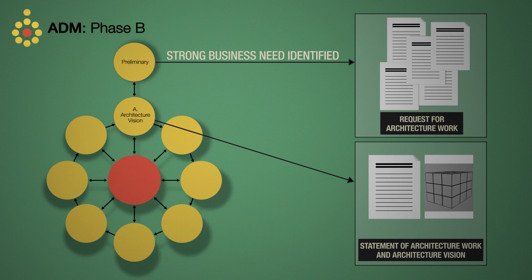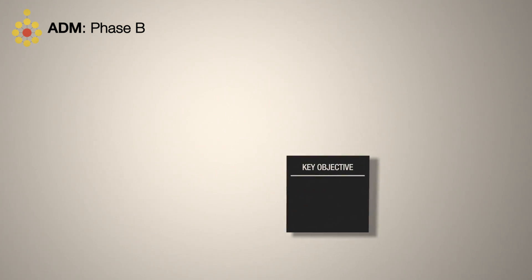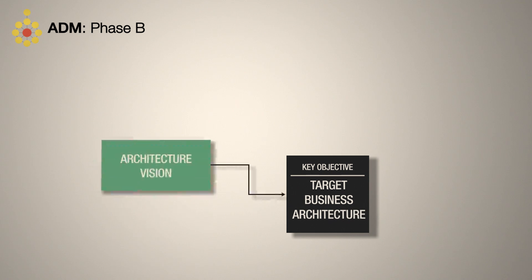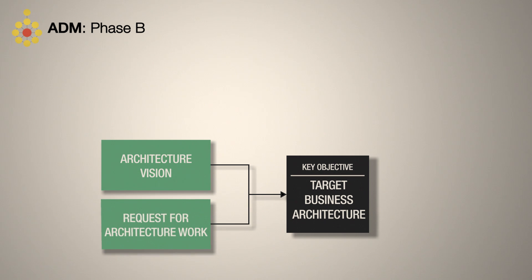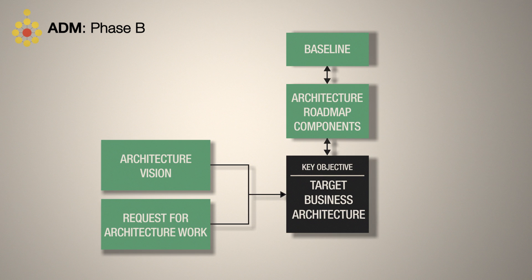A key objective in the business architecture phase is to develop a target business architecture that shows how the enterprise can achieve the architecture vision and address the request for architecture work. Its second objective is to make a first cut at identifying candidate architecture roadmap components to bridge the gap between the baseline and target business architectures.